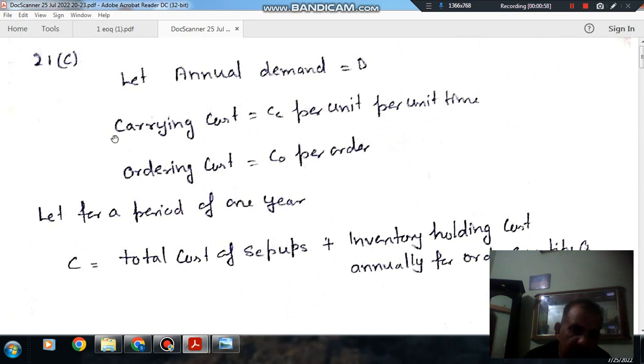So here the annual demand is D and carrying cost is CC per unit per unit time. For one unit the carrying cost is CC per unit time, and ordering cost is C0 per order. We are assuming for a period of one year as annual demand is D.